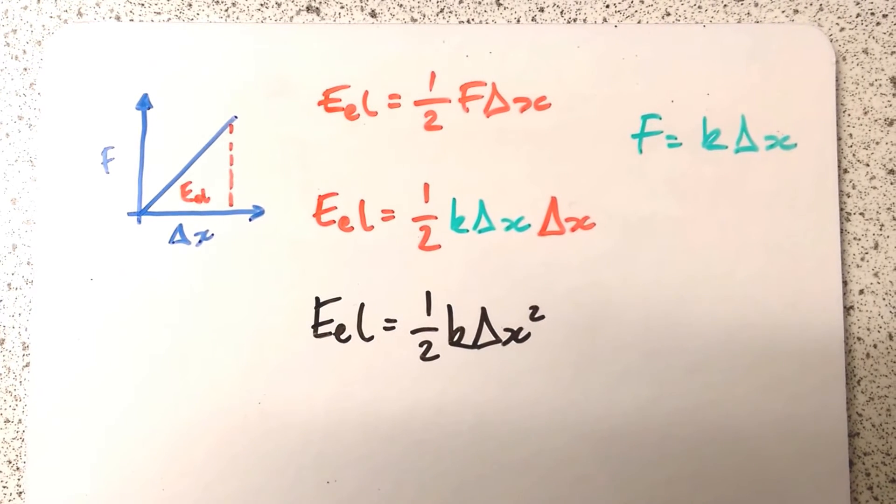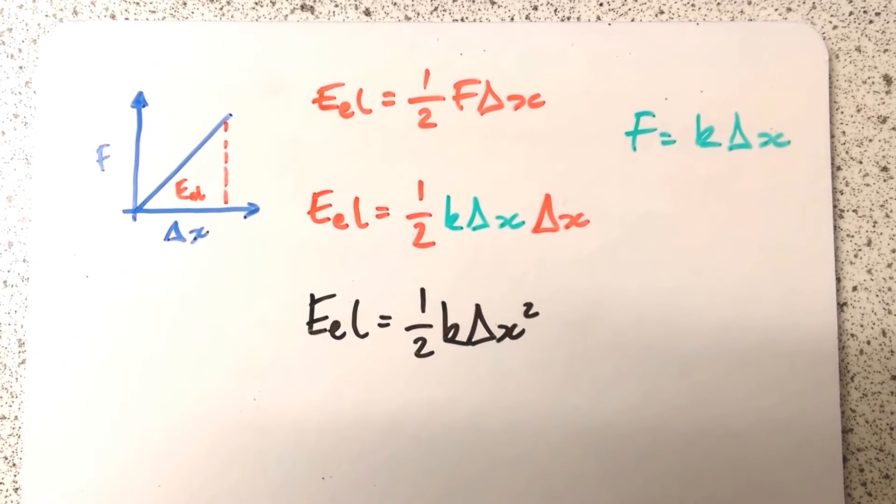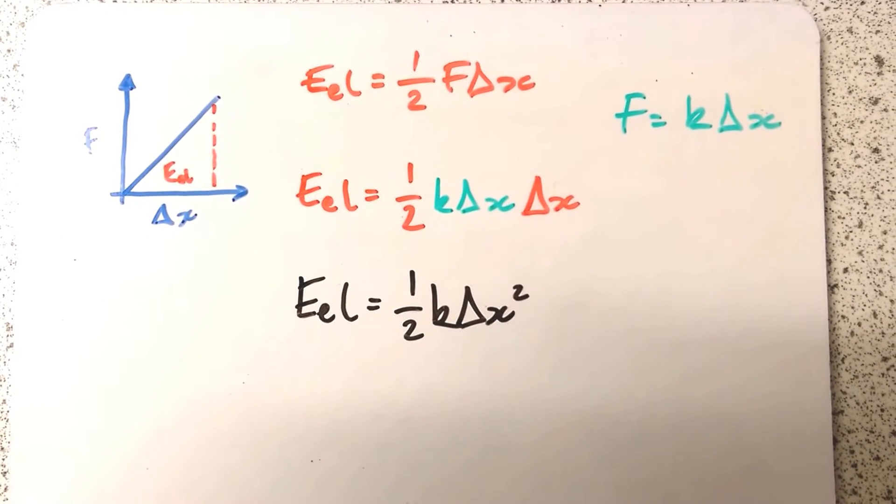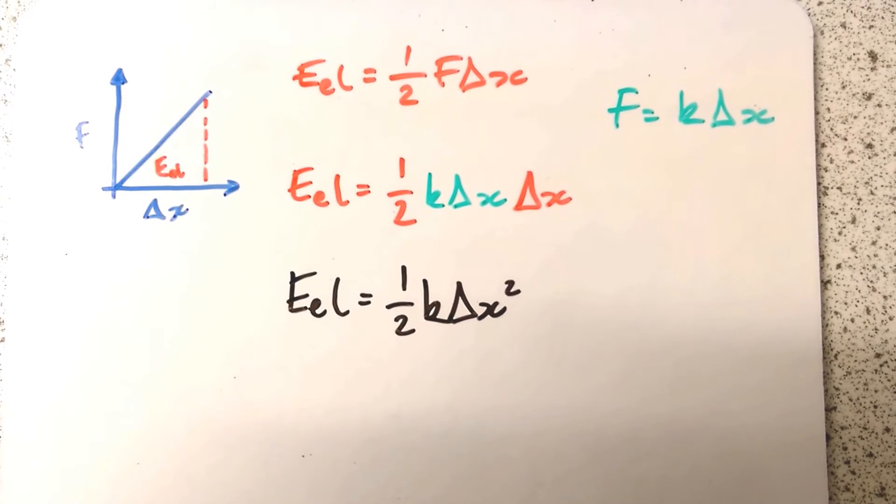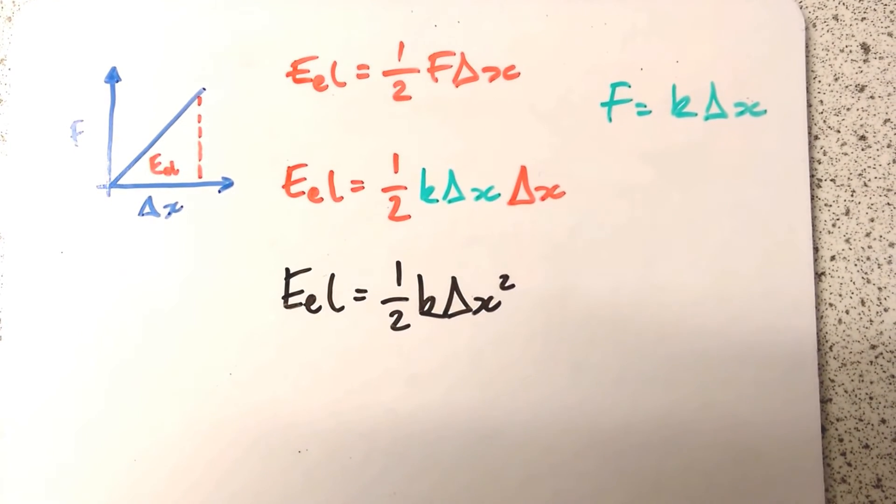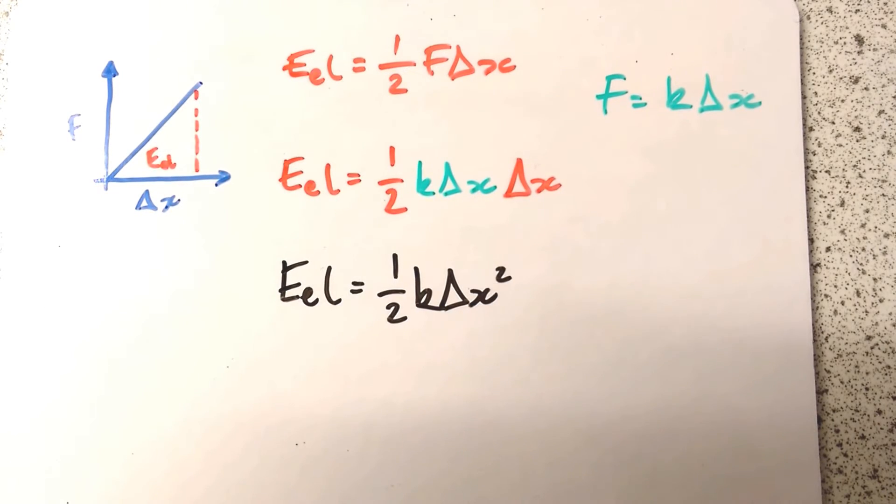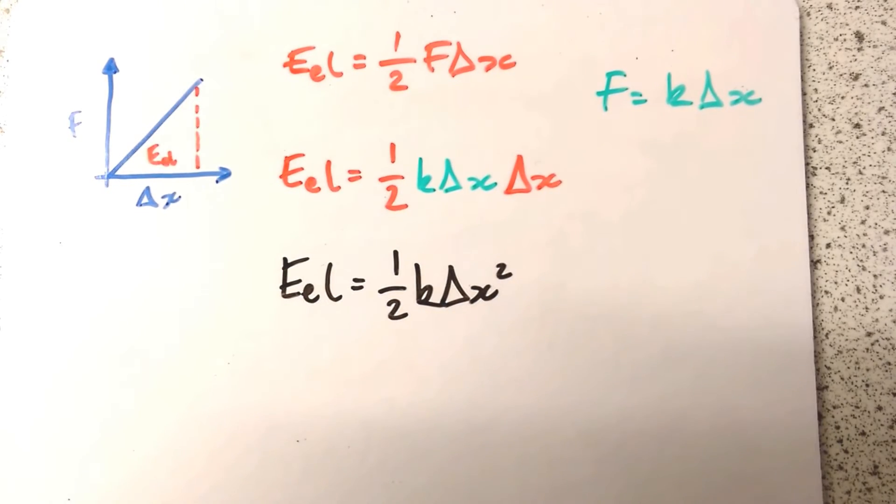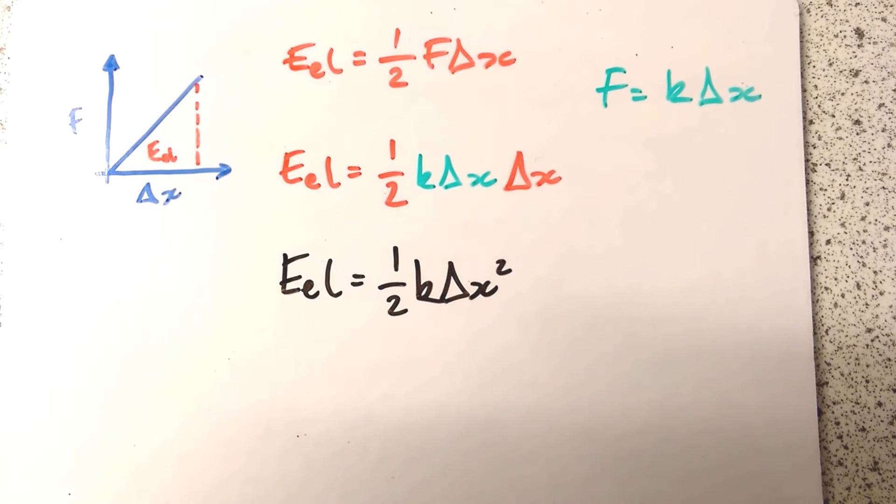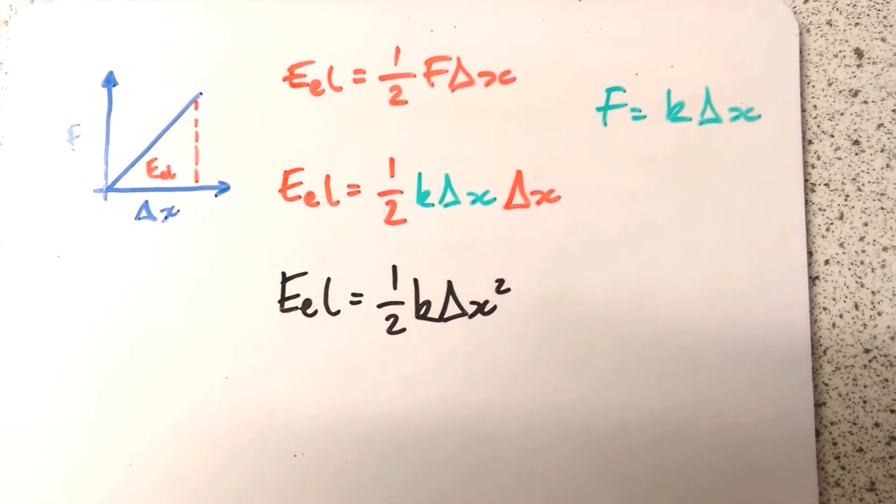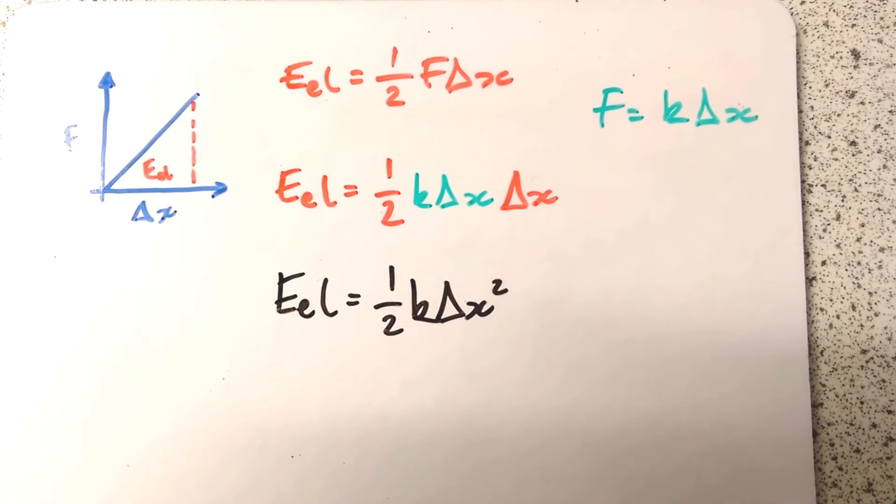So instead of F, let's substitute in kΔx. So on the next line, I've done E_el = ½kΔx·Δx, which simplifies to E_el = ½k(Δx)². It's a really useful formula. If you know the spring constant and the extension, you can quickly work out the energy stored in something that's been stretched or squashed and is obeying Hooke's Law during that point, importantly.